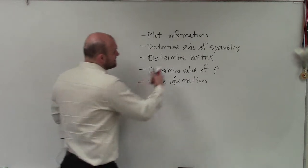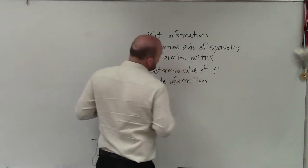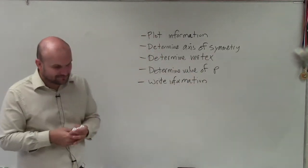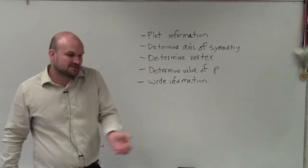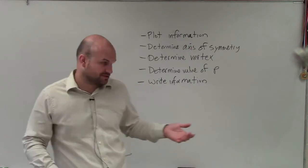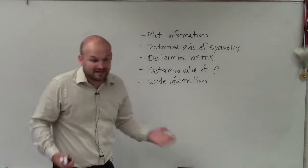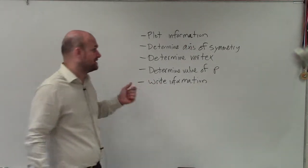The next thing is from the axis of symmetry, determine the vertex. See where exactly the value is for my vertex. Because remember, the vertex goes through the axis of symmetry. Sometimes this information will be provided and sometimes we're going to have to determine it.